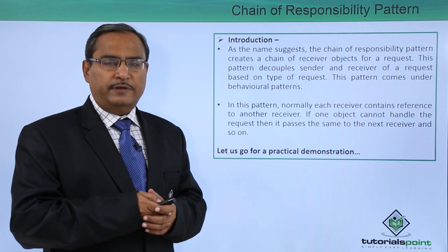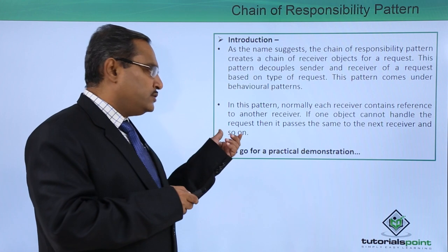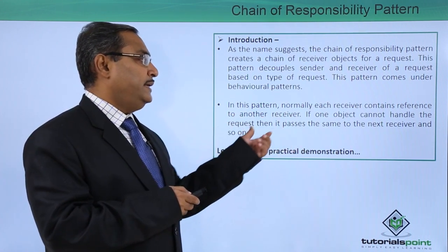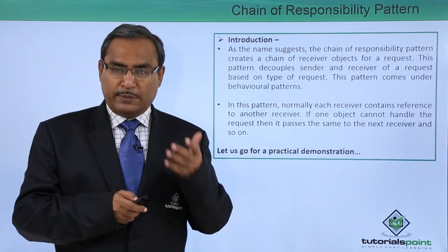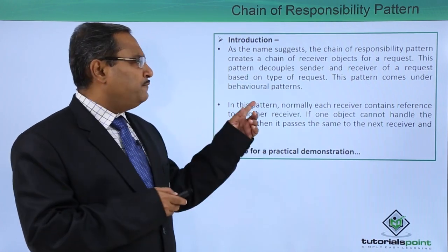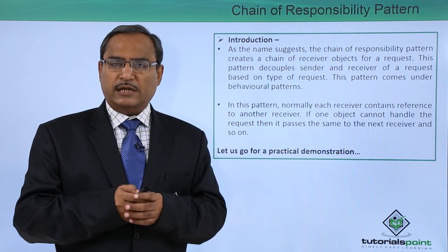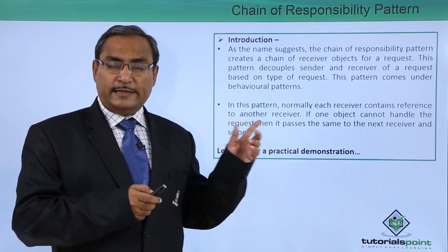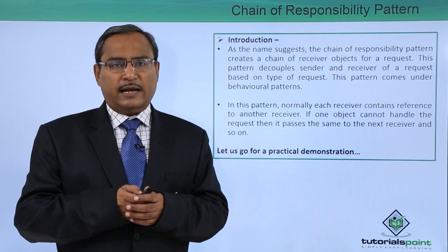This pattern comes under the behavioral pattern. In this pattern, normally each receiver contains a reference to another receiver. If one object cannot handle the request, it passes the same to the next receiver and so on — that is why the name of this design pattern is chain of responsibility. To have a better idea, let us go for a practical demonstration using a Java program, where we will discuss all these concepts in more detail, supported with UML class diagrams.